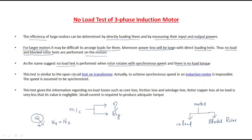This no-load test is similar to the open circuit test on a transformer — this is a very important analogy. When analyzing transformer characteristics, we perform the open circuit test with the same circuit configuration. To achieve synchronous speed in an induction motor is actually impossible; it is assumed to be synchronous. This test gives information regarding no-load losses such as core loss, frictional loss, and windage loss.